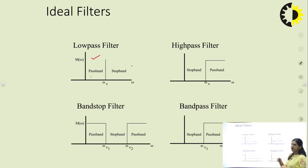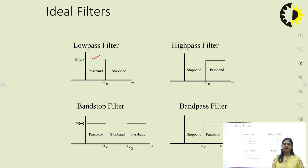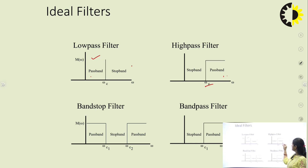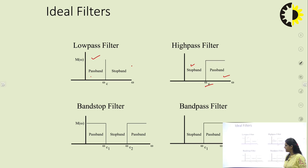For the high pass filter, as the name suggests, the filter will pass high frequencies. We set a cutoff point omega c, and after this frequency we consider the signal as high frequency. After omega c, the filter passes all frequencies, and below omega c the filter attenuates all frequencies — that region is the stop band.